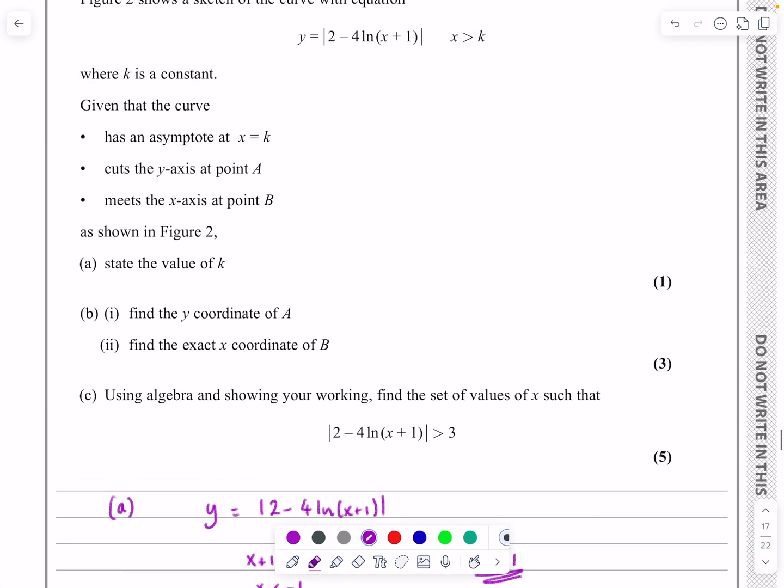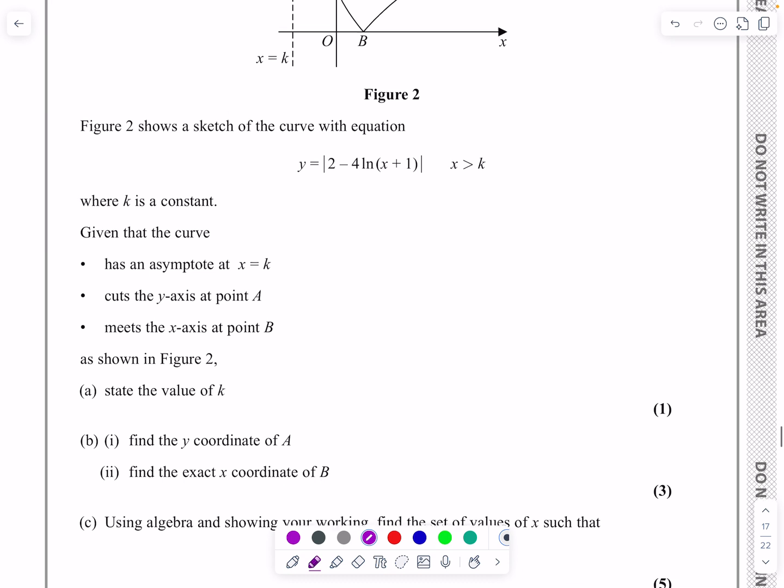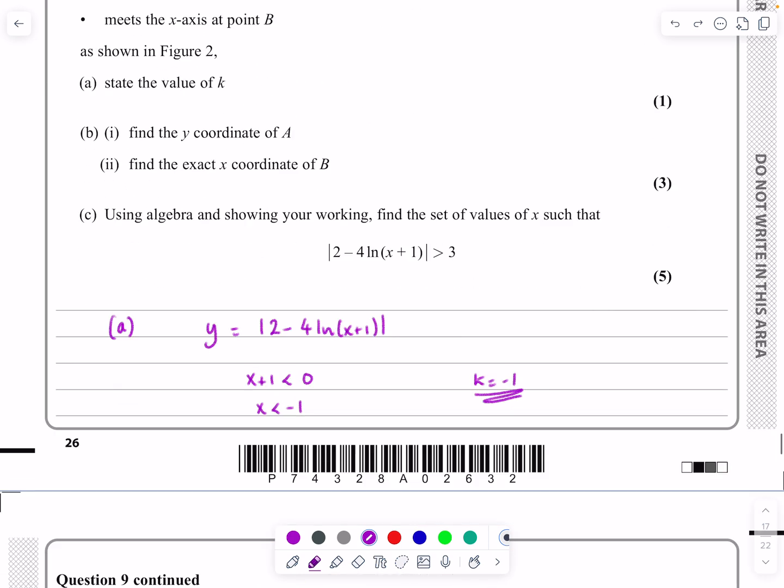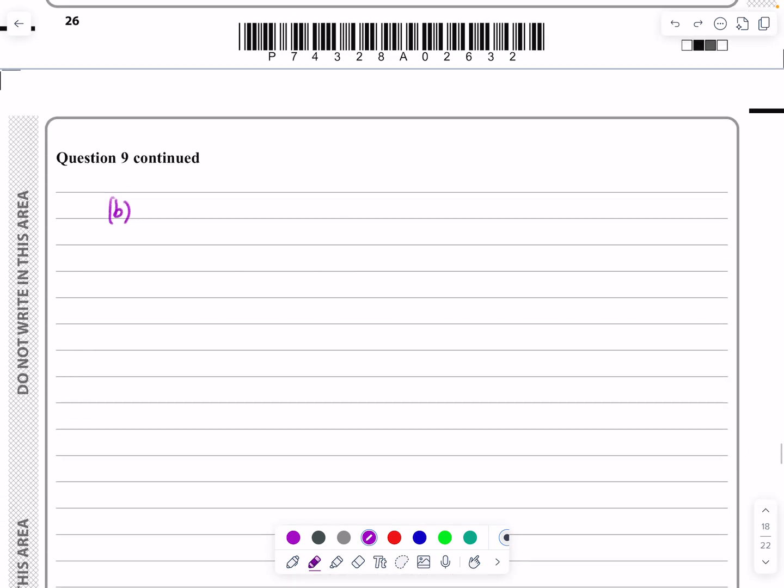Part b, when we're looking at that it says okay can we find the y coordinate of A and can we find the x coordinate of B here? And as we said just previously, for part b what was our function? Our function was y equals modulus 2 minus 4 ln(x+1).